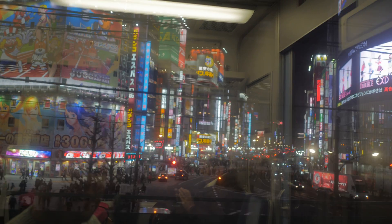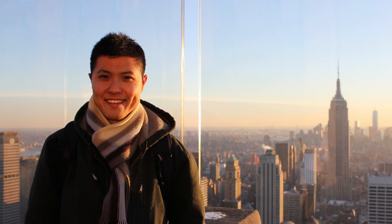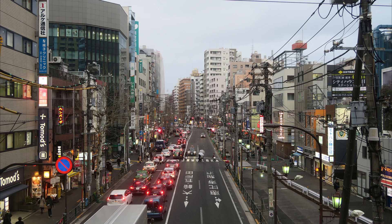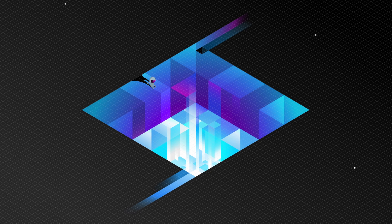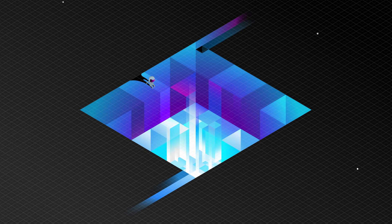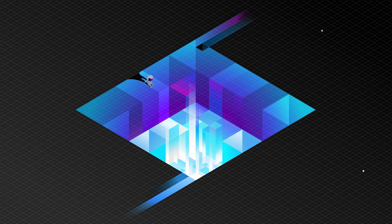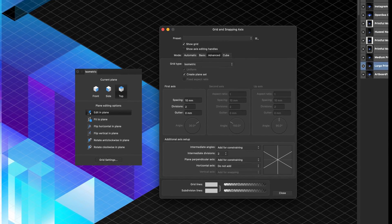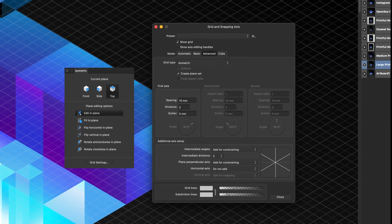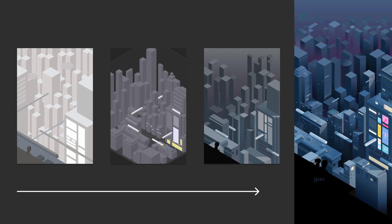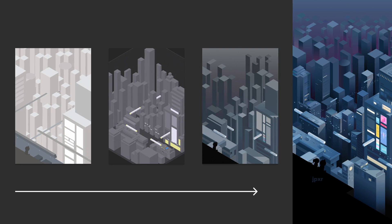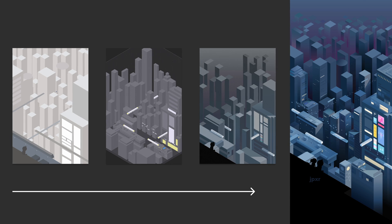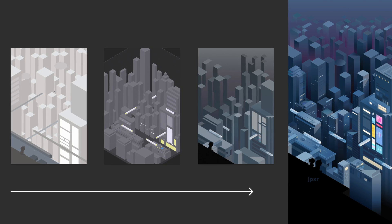I've been fortunate to have done a lot of traveling before the pandemic, and some of my best memories have been in big cities like New York, Tokyo and Osaka. So as someone that's always had a love for isometric art, the moment I discovered the isometric grid tools in Affinity Designer, there was one illustration I knew I had to do. The purpose of this video is to give you a broad overview of my process from sketch to final. I hope it will give you some good ideas on how to approach your own art.